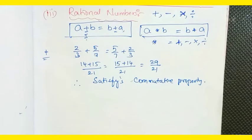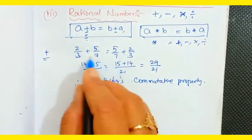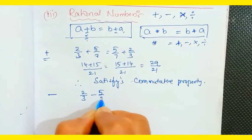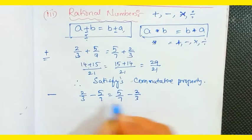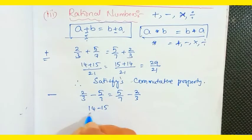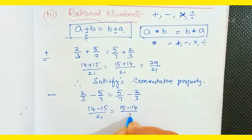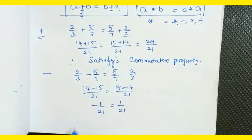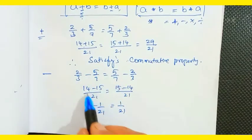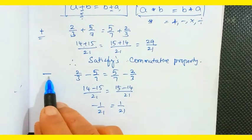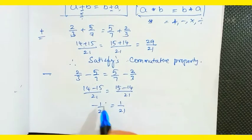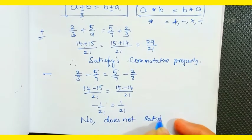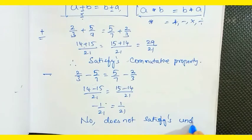Under subtraction: 2/3 - 5/7 versus 5/7 - 2/3. The left gives 14 - 15 = -1/21, and the right gives 15 - 14 = 1/21. These are not equal, so rational numbers do not satisfy the commutative property under subtraction.